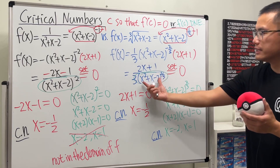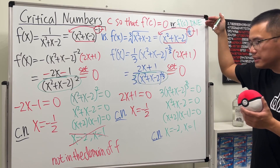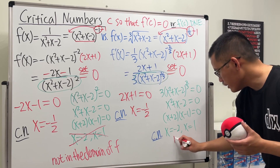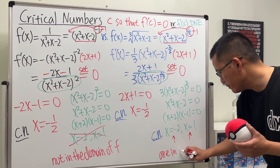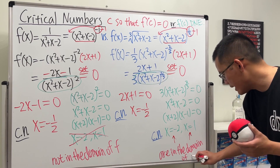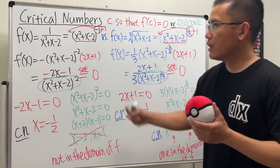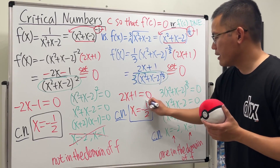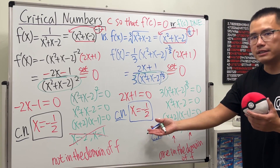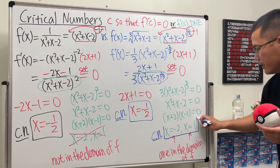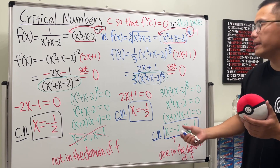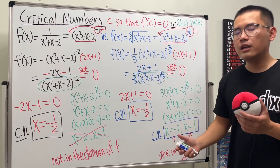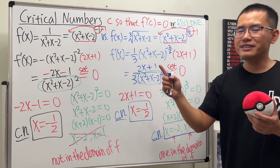In the case of the cube root function, we do have to set the denominator to zero, because negative 2 and 1 are in the domain of the original function. So for the first function, the only critical number is x = negative 1/2. For the second function, we have three critical numbers: negative 1/2 (where the derivative equals zero), and negative 2 and 1 (where the derivative does not exist). Check out the playlist for more examples on finding critical numbers.